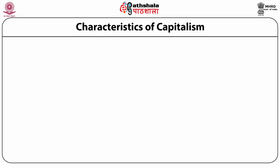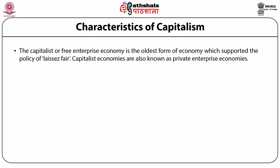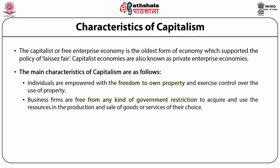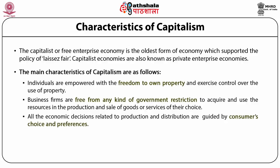Based on the definition of capitalism, its various characteristics can be explained. The capitalist economy is also known as a free enterprise economy and is the oldest form of economy, supported by the policy of laissez-faire. Capitalist economies are also known as private enterprise economies. Individuals are empowered with freedom to own property and exercise control over its use. Business firms are free from government restrictions to acquire and use resources in the production and sale of goods or services of their choice — there is no government control or intervention.